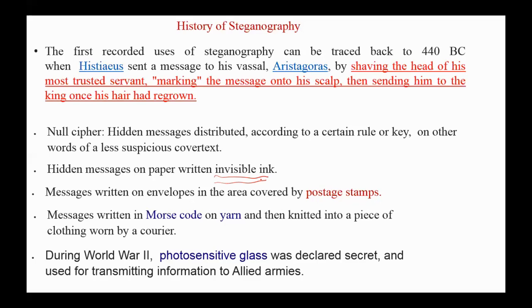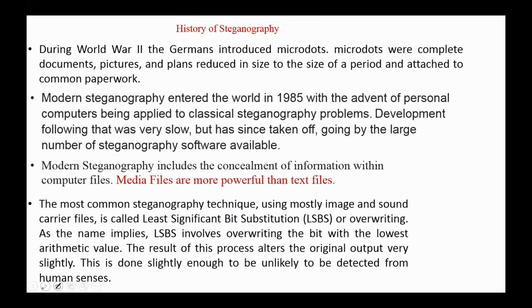Messages written on envelopes in the area covered by postage stamps are another method. Messages written in Morse code on yarn and then knitted into a piece of clothing worn by a carrier is yet another. During World War II, photosensitive glass was declared secret and used for transmitting information to Allied armies.